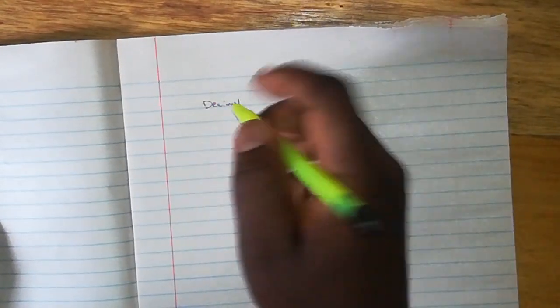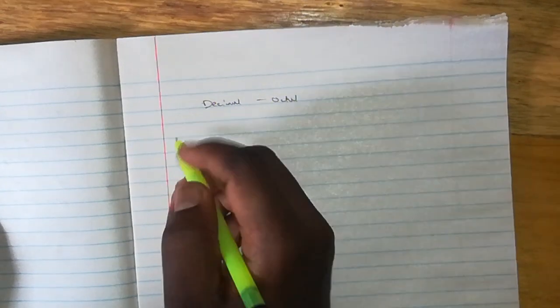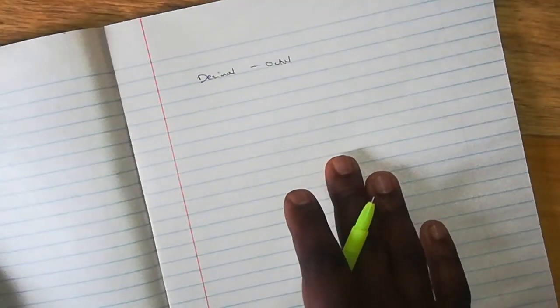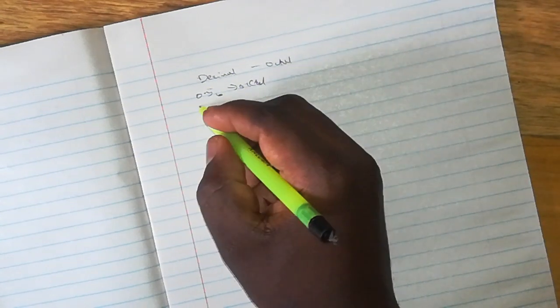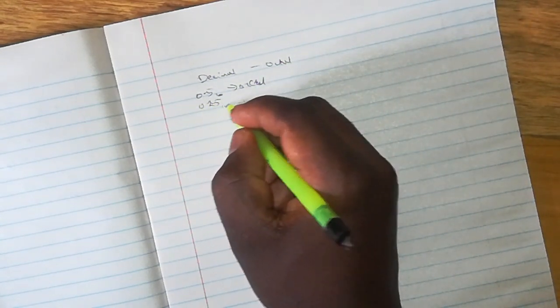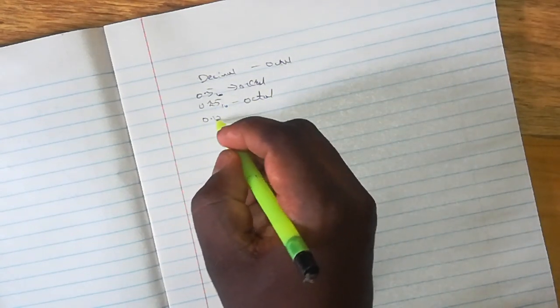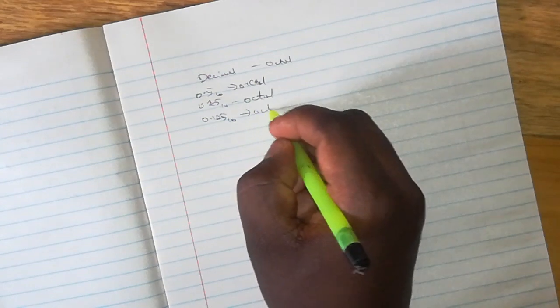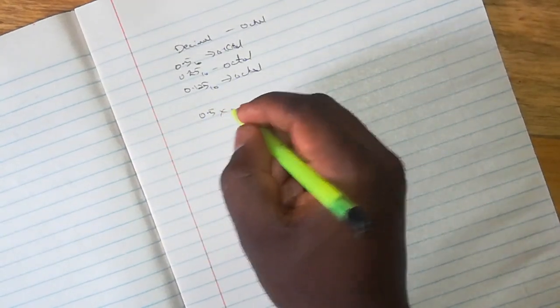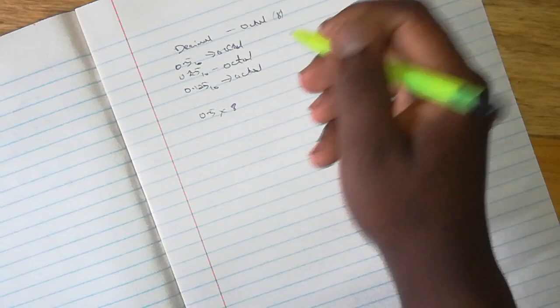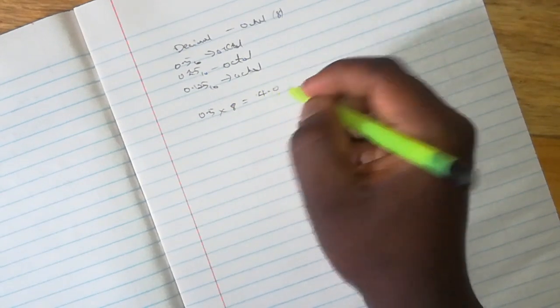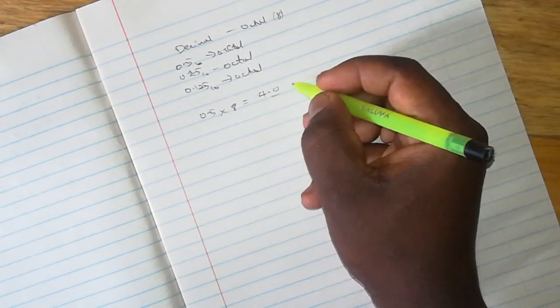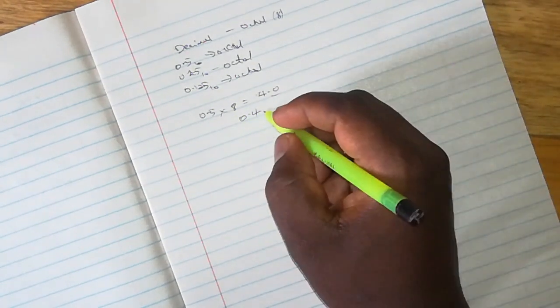Now I will repeat the same examples we have done: 0.5 to octal, 0.25 to octal, and 0.125 to octal. We will multiply that by 8, which is the base for octal, and that gives you 4.0. And our fraction part is already 0, so our answer is 0.4 base 8.